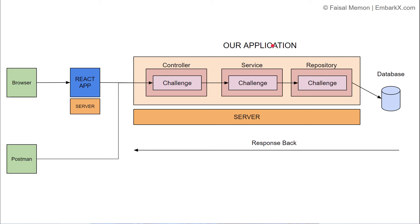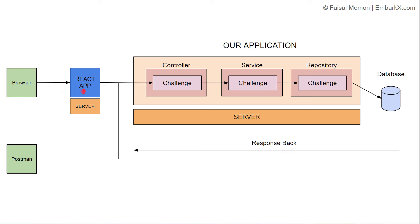This is an overview of how our application is working. This is our Spring Boot application hosted on an embedded Tomcat server. You have controller, service, and repository layers, and a separate database — right now H2, but you can use PostgreSQL or MySQL. The React application is running on a server at localhost port 3000. You can access the React application from the browser, and using Postman you can access the APIs directly. The response flows from controller to service to repository, then talks to the database and comes back.